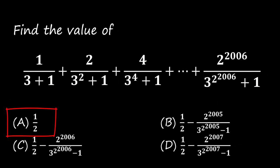A: one half. B: half minus 2 to the power of 2005 over 3 to the power of 2 to the power of 2005 minus 1. C: half minus 2 to the power of 2006 over 3 to the power of 2 to the power of 2006 minus 1. And D: half minus 2 to the power of 2007 over 3 to the power of 2007 minus 1.